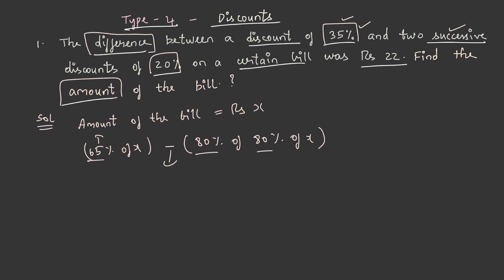That is why we have taken minus here. And here it is 80% because for the two successive discounts it is 20%. On taking out 20 out of 100, it is 80.